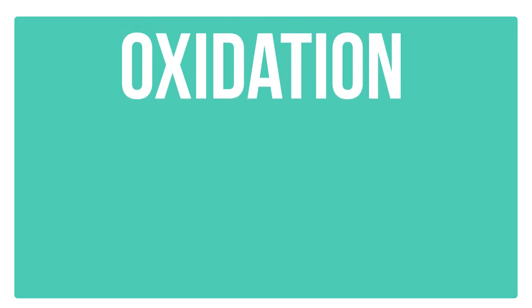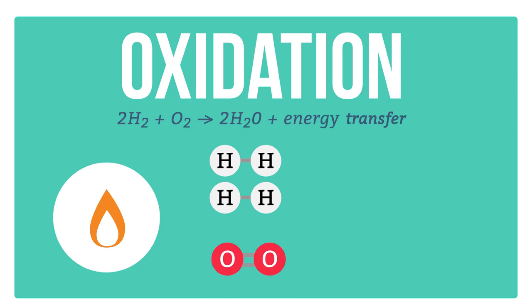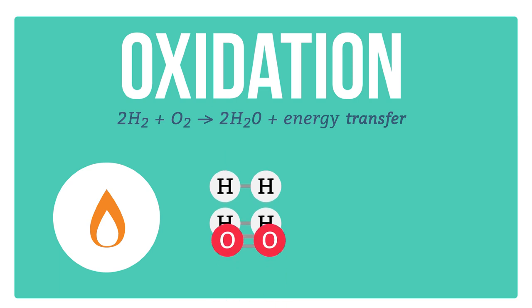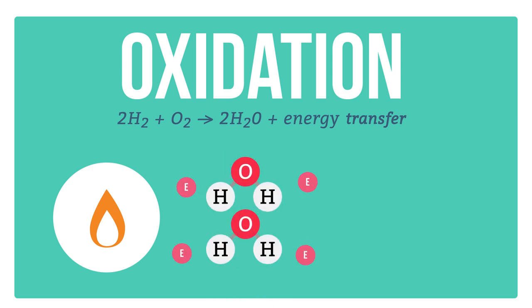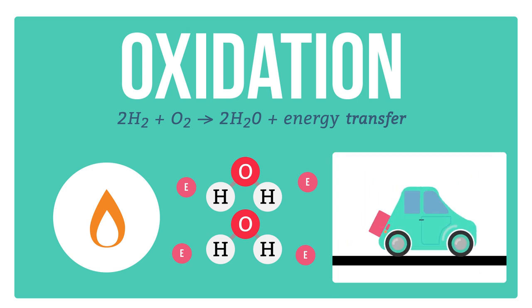First, let's look at oxidation. A good example of oxidation is a combustion reaction. Hydrogen is a clean fuel that works by combination reaction with oxygen. Energy is released as bonds are formed, and this energy can be used to power cars or appliances.